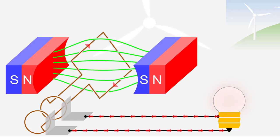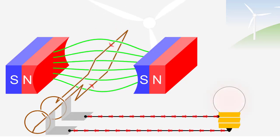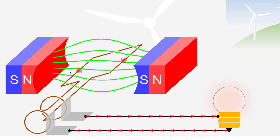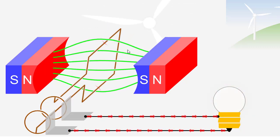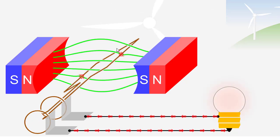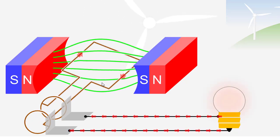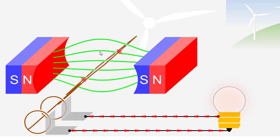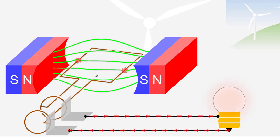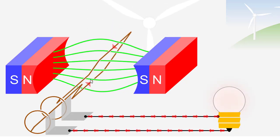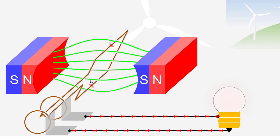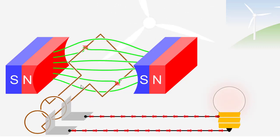In this video, we will see generation of alternating voltage. As we can see here, these are the two permanent magnets and here this is a coil. This is a single turn coil or single loop coil, and that is why it is called a single turn alternator or single loop alternator.